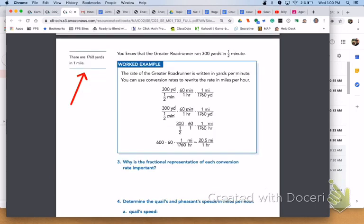Please turn to page 64. You know that the great roadrunner ran 300 yards in half a minute. Please note that when you look at the worked example, there are 1,760 yards in one mile. The rate of the greater roadrunner is written in yards per minute, so you can use conversion rates to rewrite the rate in miles per hour in order to determine that the roadrunner ran 20.5 miles per hour.